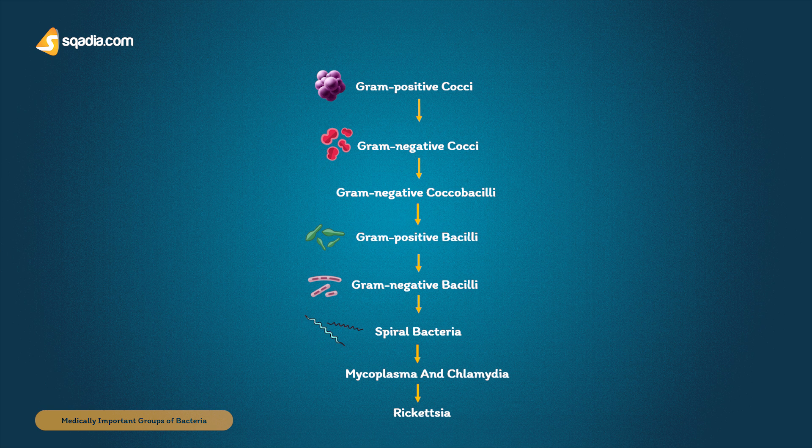Gram positive cocci are further divided into two main groups. The staphylococci, the major pathogen being Staph aureus — these are catalase positive. And the streptococci, which are catalase negative, the major pathogens being Streptococcus pyogenes, which causes sore throat and rheumatic fever, and Streptococcus agalactiae, which causes neonatal meningitis and pneumonia.